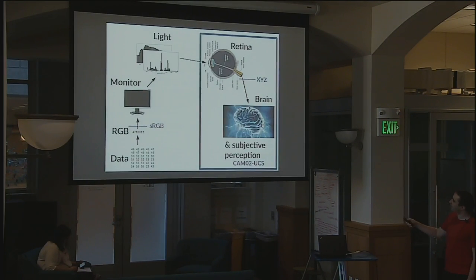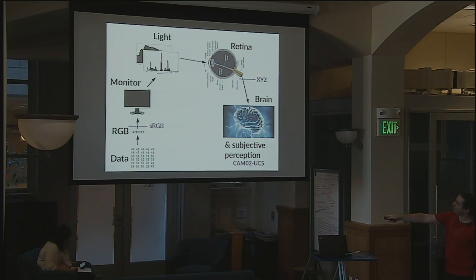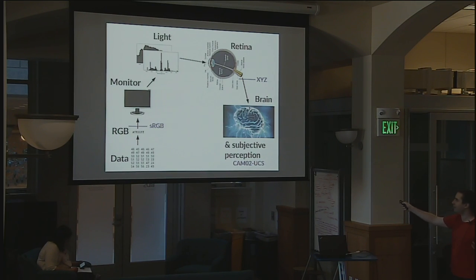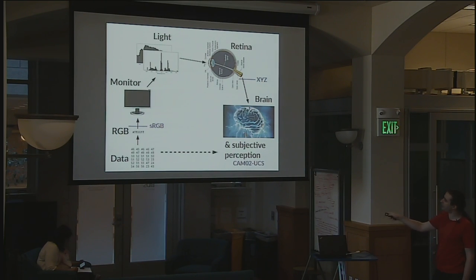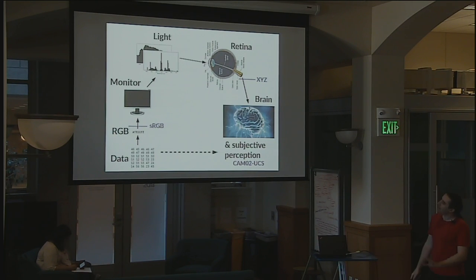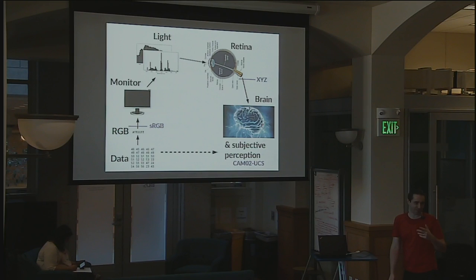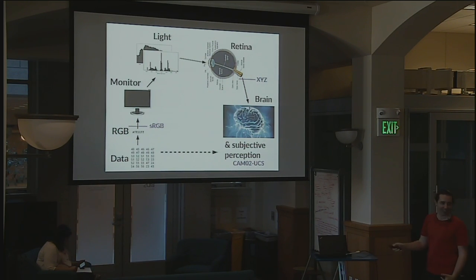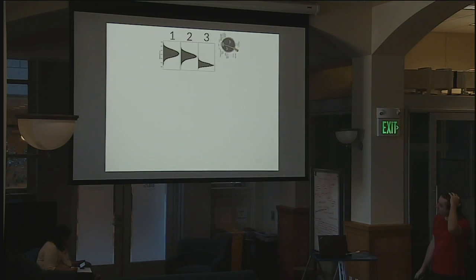In CAM02-UCS space, Euclidean distance between two points is a pretty good estimate of how similar a human would judge those two colors. Once we're working in this space, it's easy to design curves with particular properties. We now know how to take an RGB color map all the way to XYZ to CAM02-UCS, modeling how it will actually function as an interface between data and brain. But what about colorblind people?